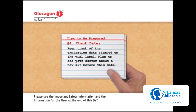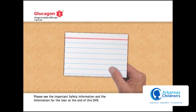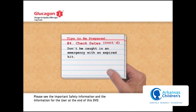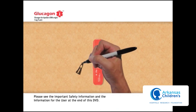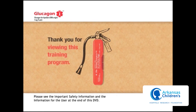Tip number four: Check dates. Keep track of the expiration dates stamped on the vial label and plan to ask your doctor about a new kit before that date — don't be caught in an emergency with an expired kit. Tip number five: Ask. You may ask your doctor for a second Lilly Glucagon emergency kit so you can be prepared at home and at work. Thank you for viewing this training program. Glucagon is a potentially life-saving treatment, so having at least one emergency kit on hand and instructing others on how to use it is important.